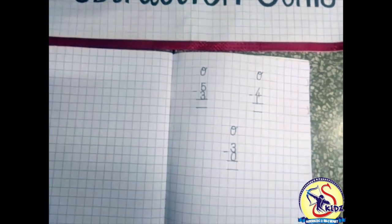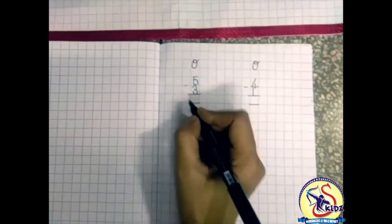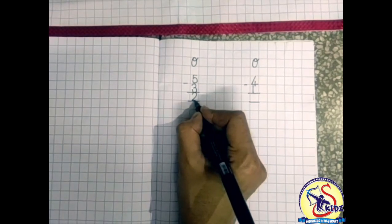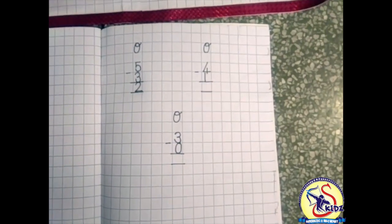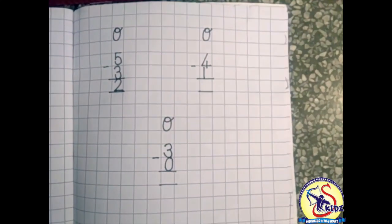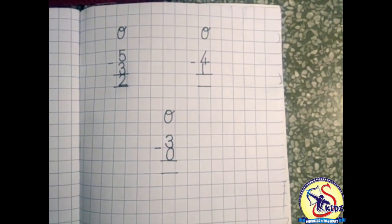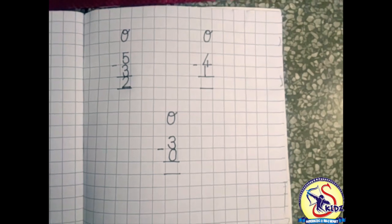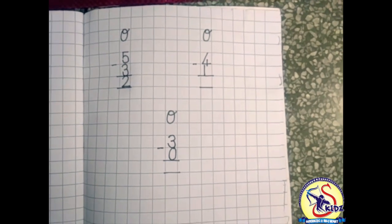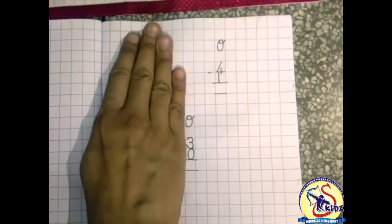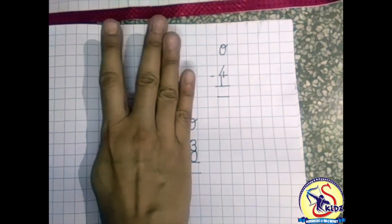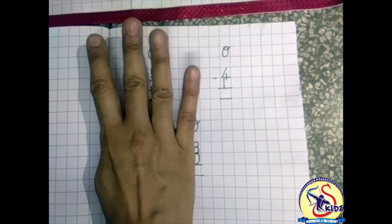Now next number is four minus one. Now how many fingers we will take out? Yes, first number is four, so we will take out four fingers: one, two, three, four.